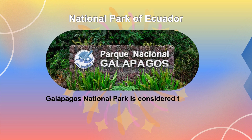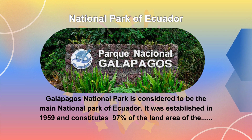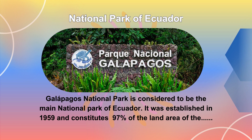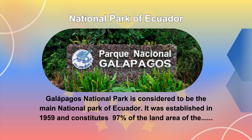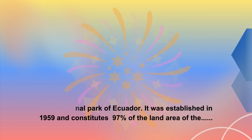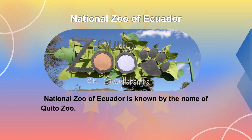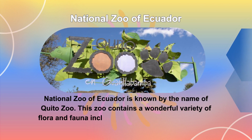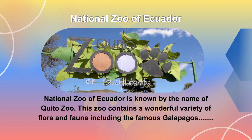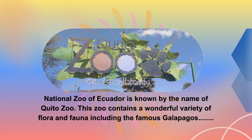Galápagos National Park is considered to be the main national park of Ecuador. It was established in 1959 and constitutes 97% of the land area of the Galápagos Islands, with fascinating flora and fauna. The National Zoo of Ecuador is known as Quito Zoo, which contains a wonderful variety of flora and fauna, including the famous Galápagos tortoise and the jaguar.